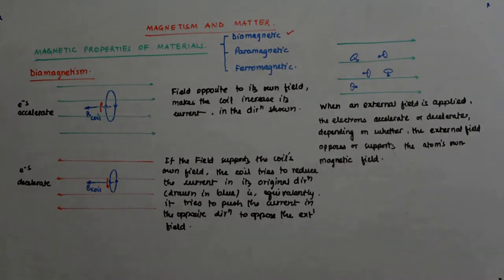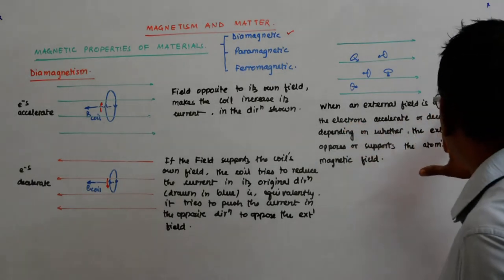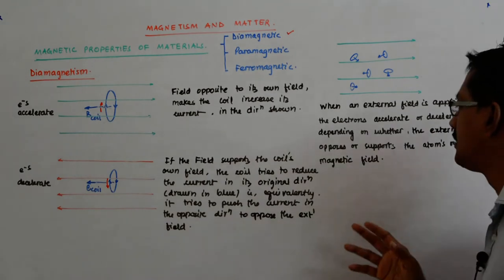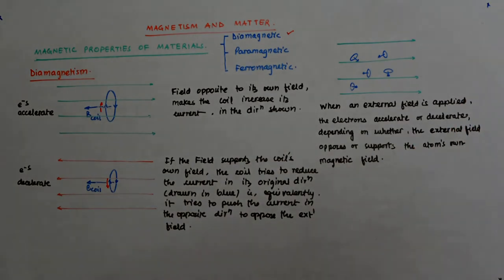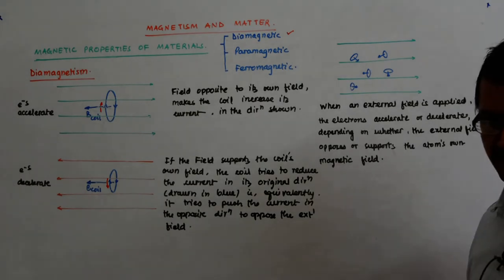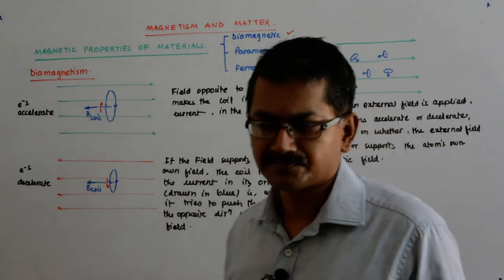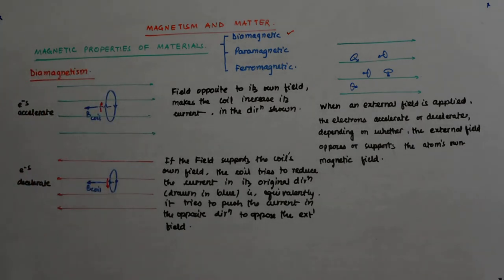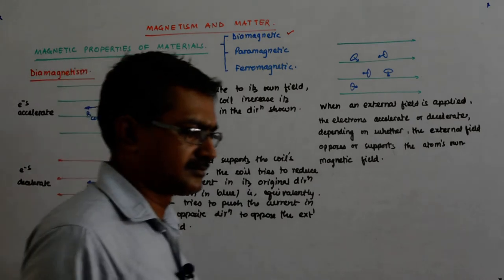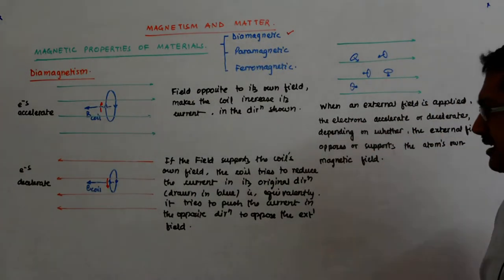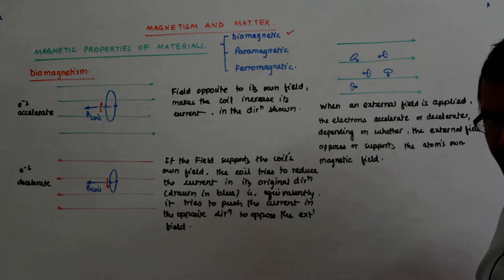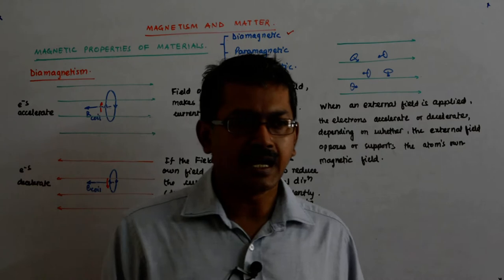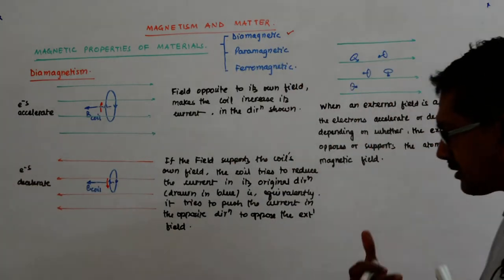When an external field is applied, the electrons accelerate or decelerate depending on whether the external field opposes or supports the atom's own magnetic field. And that we can clearly see from here — exactly the same thing is happening. The moment that happens, it means in the net, I am opposing the external field.